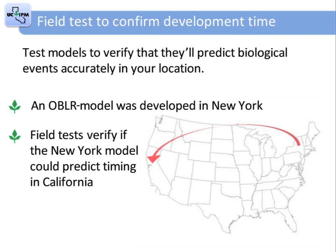If a phenology model has been developed in a location far from yours, you should test the model for one or more seasons in your area to verify it will predict biological events accurately. A different location presents different conditions an insect is exposed to, which may influence its development. This also applies for a phenology model developed for an insect in one crop that you'd like to use in another crop. For example, at one time we didn't have a phenology model for oblique-banded leaf roller in California, but one was developed in New York. According to the New York model, one generation of OBLR takes 2,000 degree days using lower and upper thresholds of 43°F and 90°F respectively. The biofix is the date the first moth is caught in a trap.